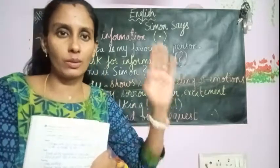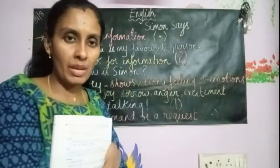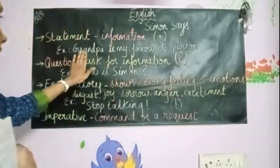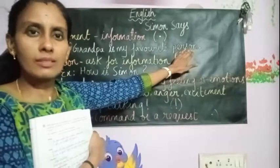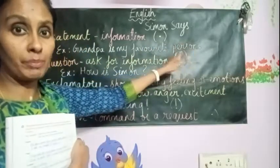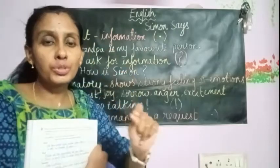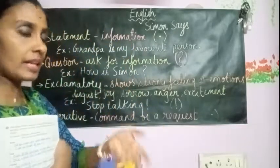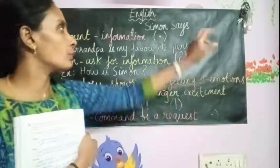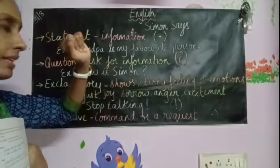Let us see what each one is. The first is statement. What is a statement? Any sentence which gives information is called a statement. For example: 'Grandpa is my favorite person.' It is a normal sentence giving me information about grandpa. Usually a statement ends with a full stop. Remember that: a statement gives information and ends with a full stop.